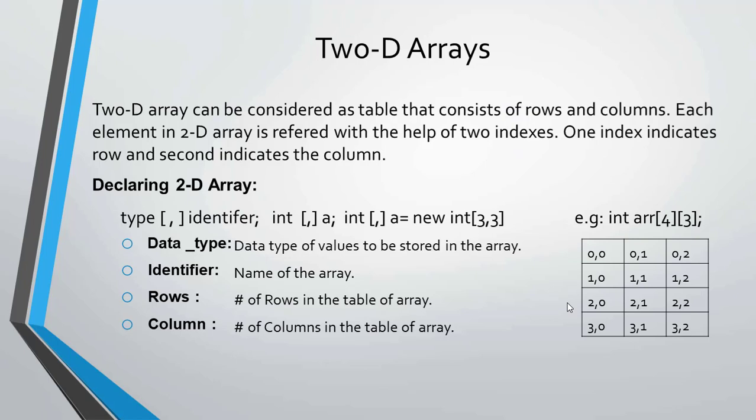A two-dimensional array can be considered a table that consists of rows and columns. Each element in a two-dimensional array is referred to with the help of two indices — one index indicates the row and the second indicates the column.